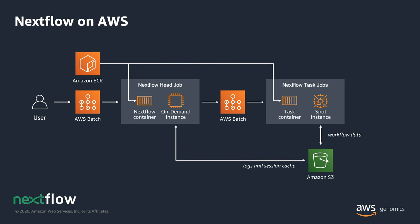Next is an example architecture for running Nextflow on AWS. Nextflow runs as a containerized job serving as the workflow orchestration layer, and it talks to AWS Batch for running individual processes within the Nextflow workflow. Data, logs, and session cache from the workflow are sent to Amazon S3. Like the Step Functions example, this architecture is also entirely serverless — AWS Batch handles all the scaling required, including the master process and individual tasks.